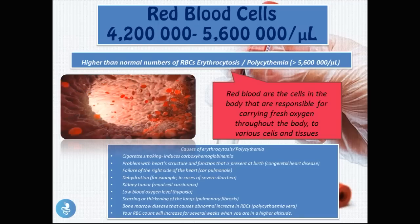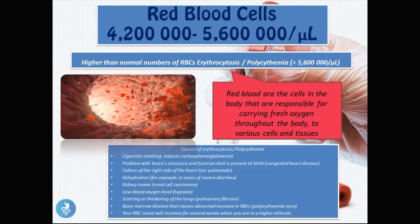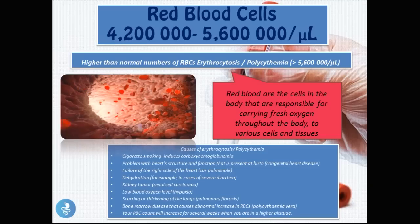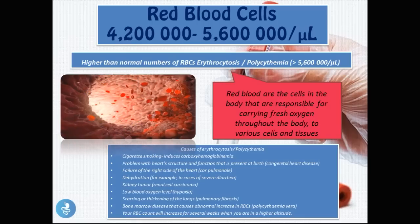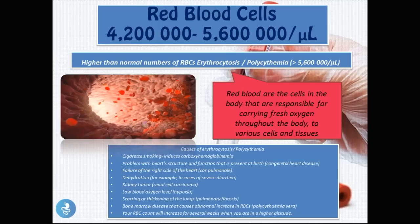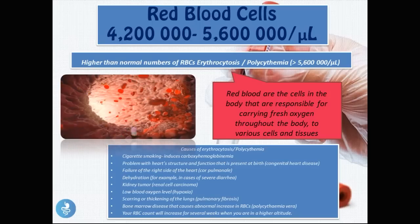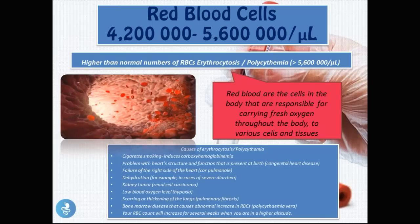Other causes of erythrocytosis include congenital heart disease, failure of the right side of the heart known as cor pulmonale, dehydration such as in cases of severe diarrhea, a kidney tumor called renal cell carcinoma, low blood oxygen levels known as hypoxia, scarring or thickening of the lungs called pulmonary fibrosis, a bone marrow disease called polycythemia vera, and living at a higher altitude.